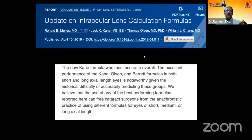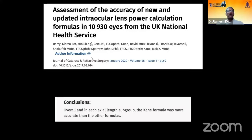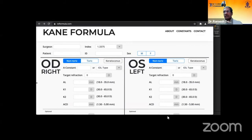Then the same group of co-authors — Ronald Melles and co-authors — published another paper in April 2019 finding that the new Kane formula was the most accurate of all. Excellent performance of the Kane, Olsen, and Barrett's formulas in both short and long eyes is noteworthy. A follow-up article in JCRS January 2020, using independent data from a single surgeon in Bristol under the National Health Service, confirmed that overall and in each axial length subgroup, the Kane formula was more accurate than Barrett's.